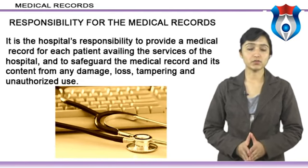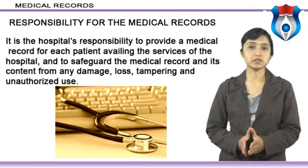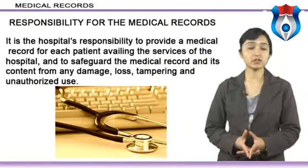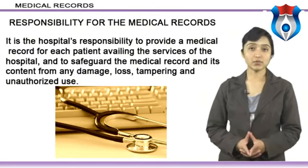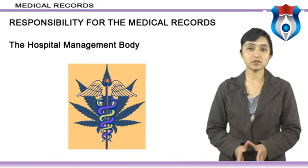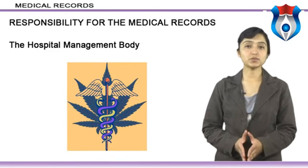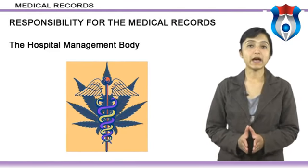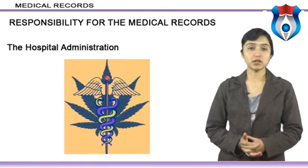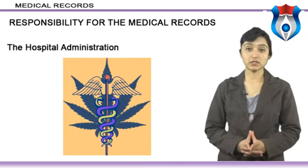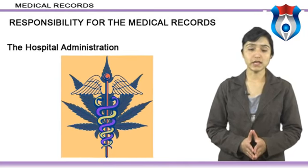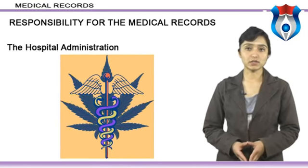Let us now discuss the responsibility for medical records. It is the hospital's responsibility to provide a medical record for each patient availing the services of the hospital, and to safeguard the medical record and its content from any damage, loss, tampering and unauthorized use. The hospital management body is responsible for the proper care of the patient and for providing an appropriate infrastructure by appointing capable and qualified personnel for the efficient management of the hospital. The hospital administration: the prime responsibility of the chief executive officer and the medical director is to ensure that the medical and non-medical staff follows the rules and regulations established by the hospital with regard to patient care.